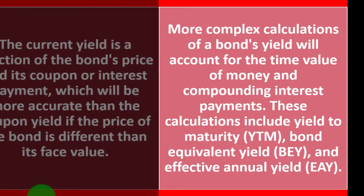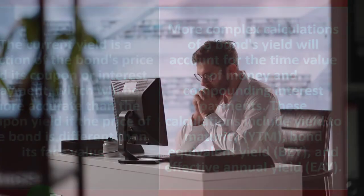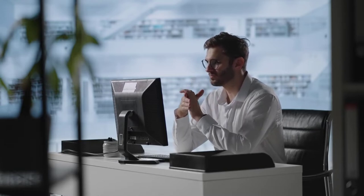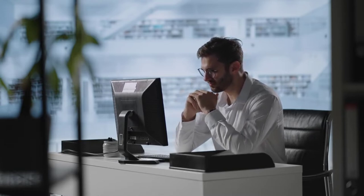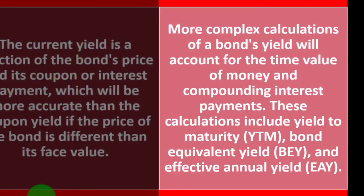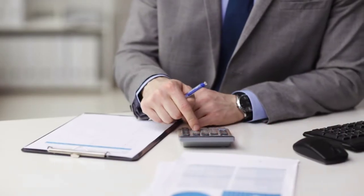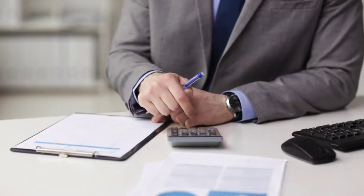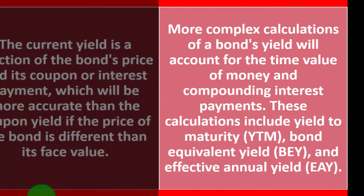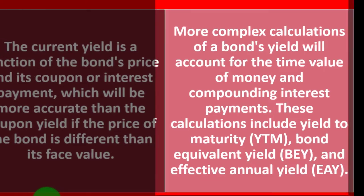More complex calculations of a bond's yield account for the time value of money and compounding interest payments. We typically think about it in terms of two streams of payments: the interest stream and the face amount at the end. These calculations include yield to maturity (YTM), bond equivalent yield (BEY), and effective annual yield (EAY).